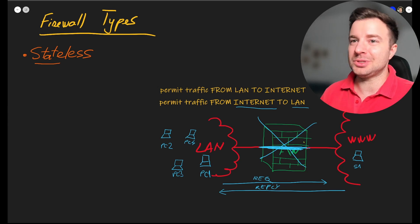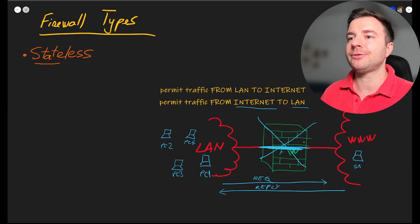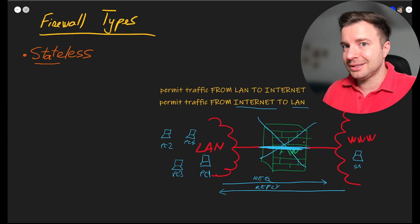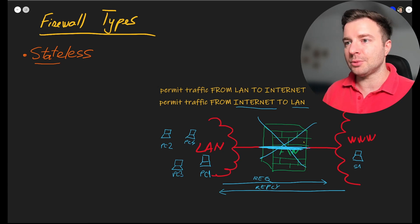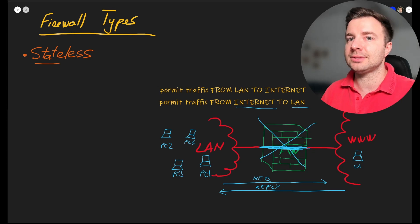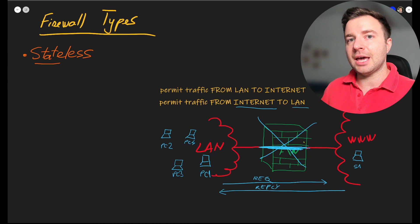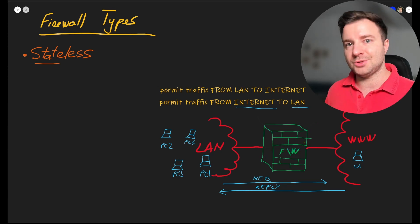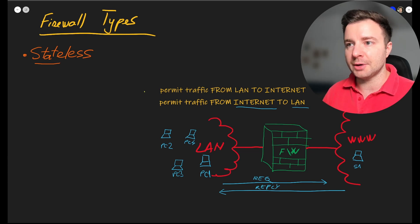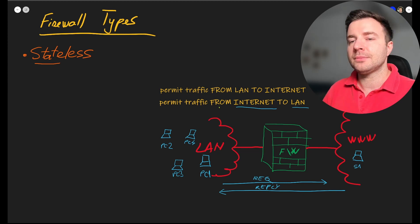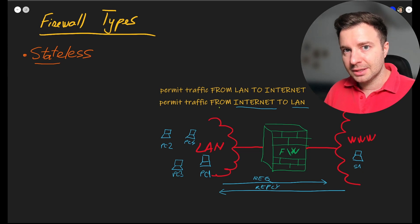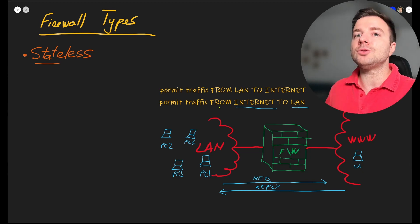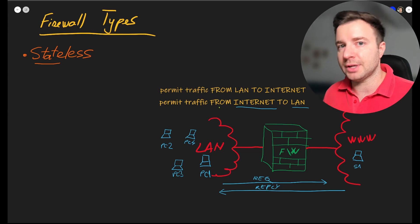This approach — needing a separate rule for each type of connection — doesn't scale with a stateless firewall. We need the firewall to track connections initiated from the LAN and dynamically know how to allow those responses back, but nothing else. For example, if I'm a regular user wanting to access Facebook, the request goes out, but the firewall should be smart enough to allow only the return traffic for that specific request.